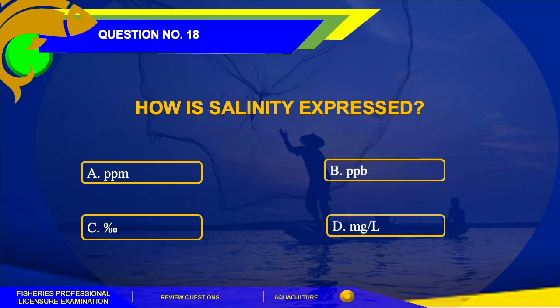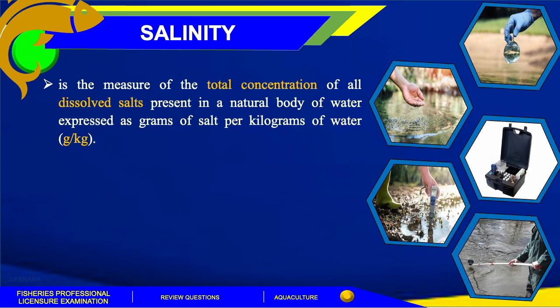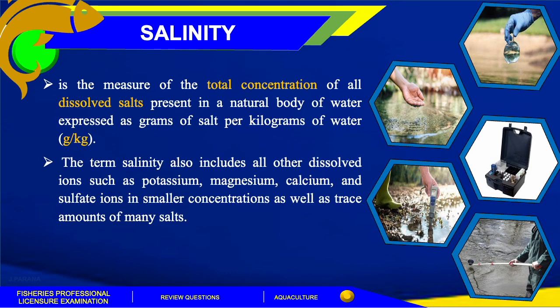The answer for this question is letter C. The term salinity does not restrict itself to the levels of sodium chloride present. It is the measure of the total concentration of all dissolved salts present in a natural body of water, expressed as grams of salt per kilogram of water. Salinity also includes all other dissolved ions such as potassium, magnesium, calcium, and sulfate ions in smaller concentrations, as well as trace amounts of many salts. Aside from grams per kilogram, salinity is also expressed in various units: PPT or parts per thousand, per mil, and percent.